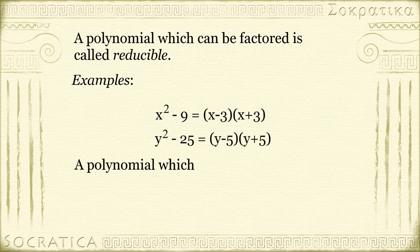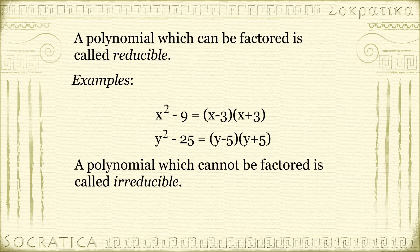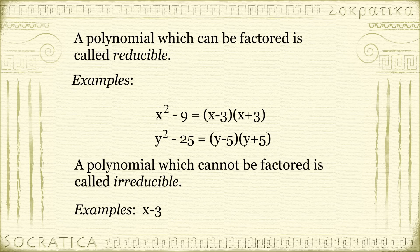Now a polynomial which cannot be factored is called irreducible. Here are some examples. Like above, when we factored x² - 9, we factored into (x - 3)(x + 3). Now it turns out that x - 3 and x + 3 cannot be factored further.